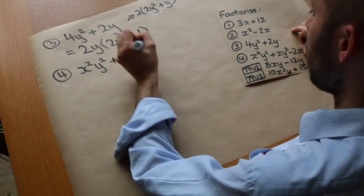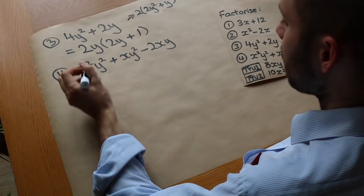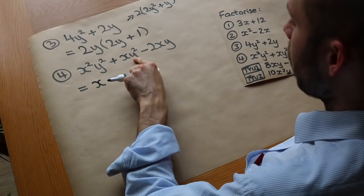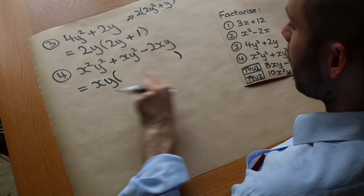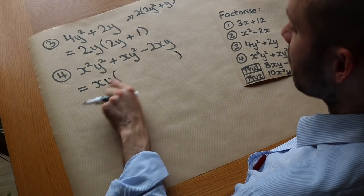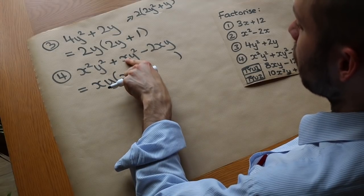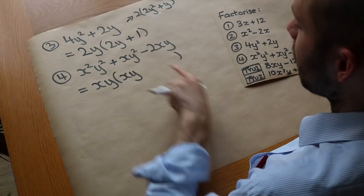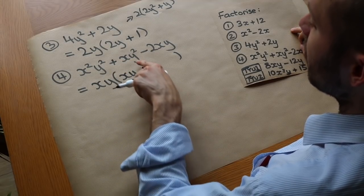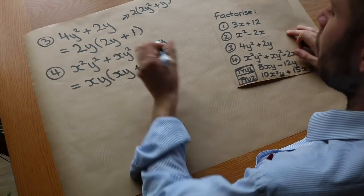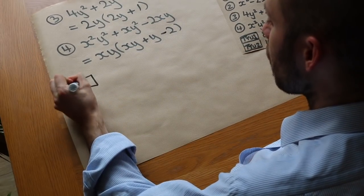Now a harder example: X²Y²+XY²−2XY. Let's find what's common to all three terms. X is common to all of them. For Y: the first two terms have Y², but the last only has Y, so Y is common to all. We factorize out XY. Then XY times XY gives X²Y², XY times Y gives XY², and XY times −2 gives −2XY. So the factorization is XY(XY+Y−2).